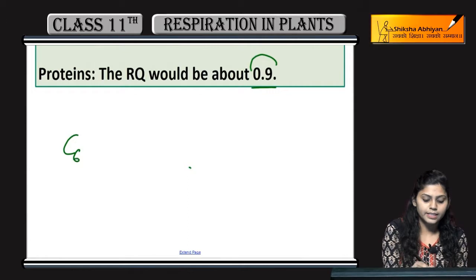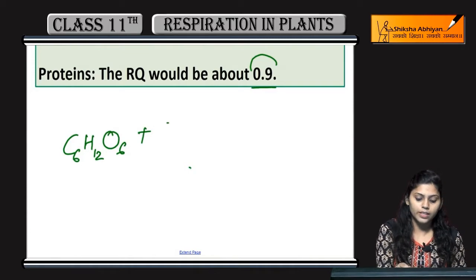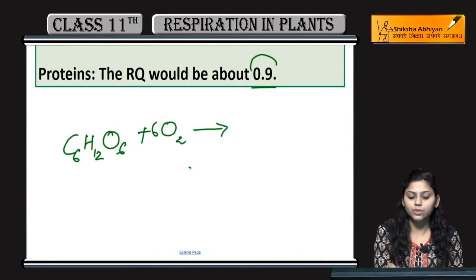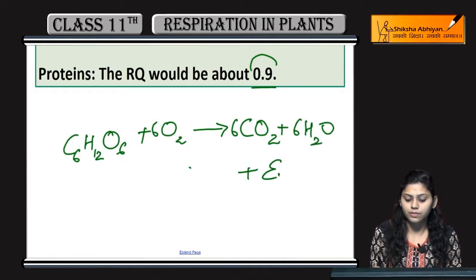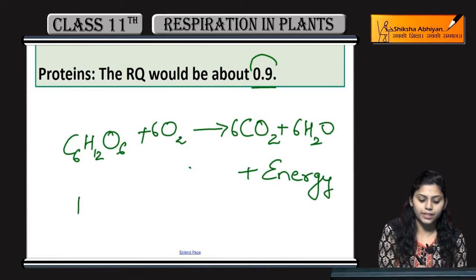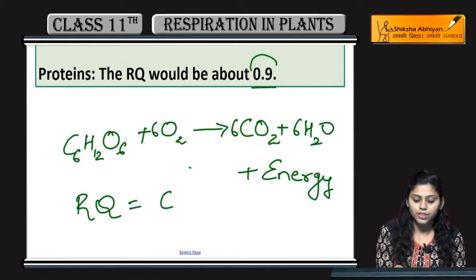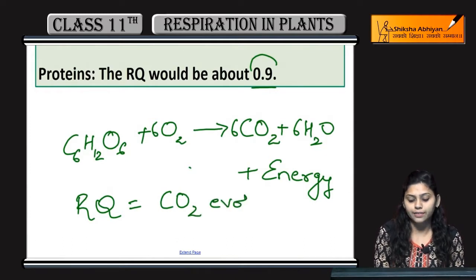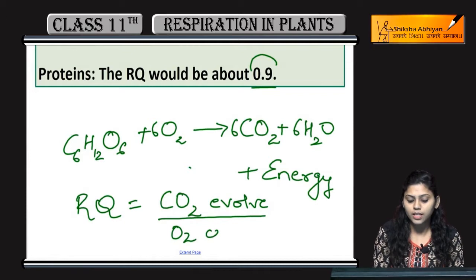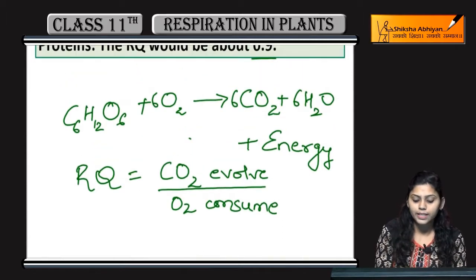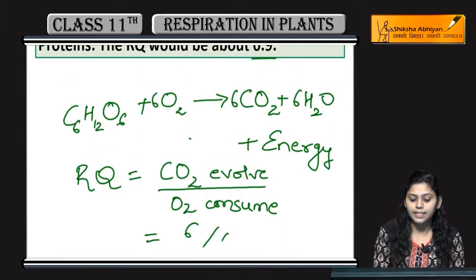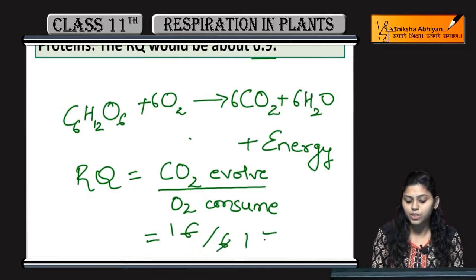For carbohydrates, let's take the simplest example — glucose: C6H12O6. Upon oxidation, 6 molecules of CO2 and water are produced with energy. So the Respiratory Quotient = CO2 evolved / O2 consumed = 6 / 6 = 1.